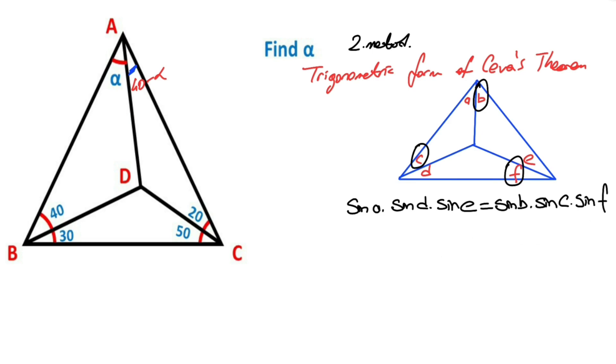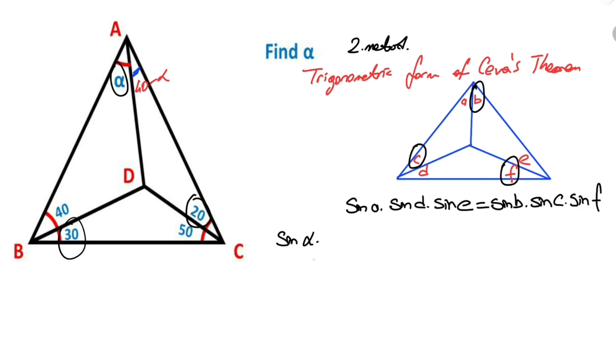But we use the first equation. If we use this property for the question, therefore sine alpha times sine 30 times sine 20 must be equal sine of 40 minus alpha times sine 40 times sine 50. Right?